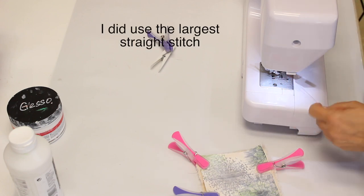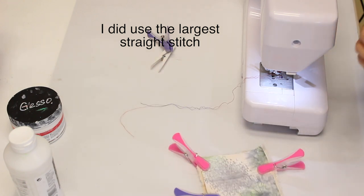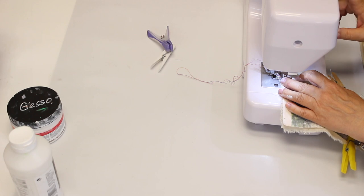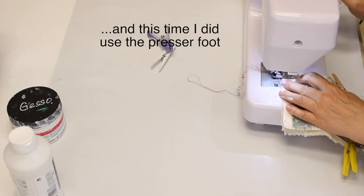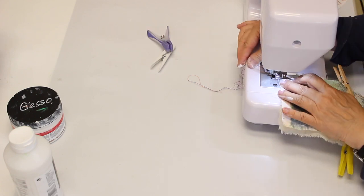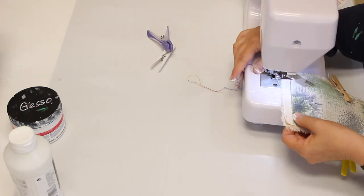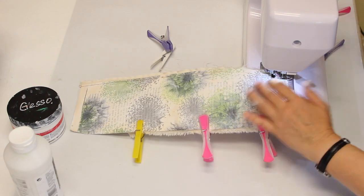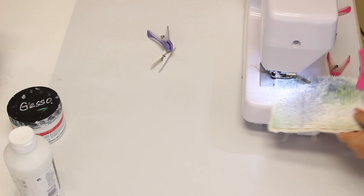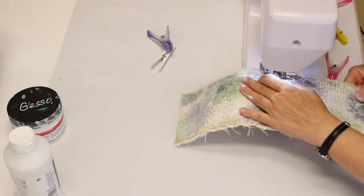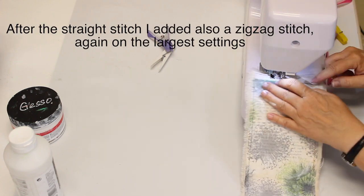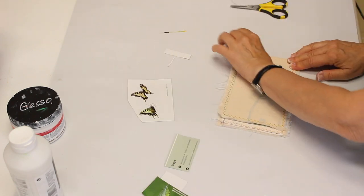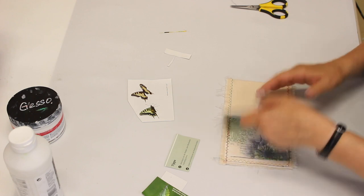I do use the same threads I have used in the other project which is an embroidery thread. But again, if you don't have it, you could use an ordinary sewing thread too. Now I'm gonna crease it a little bit for the accordion part.